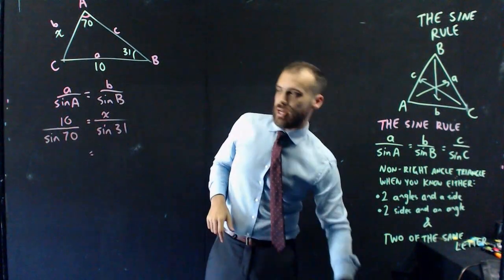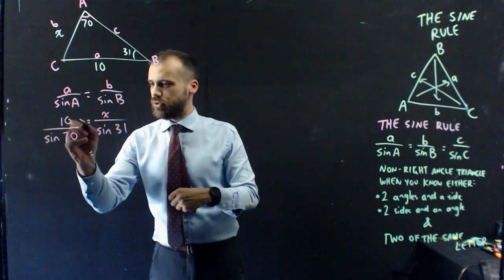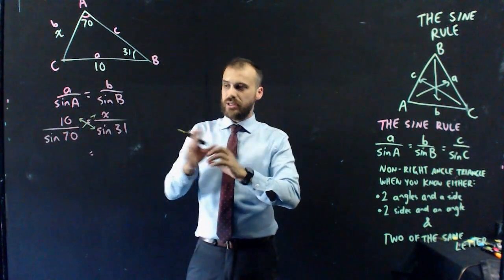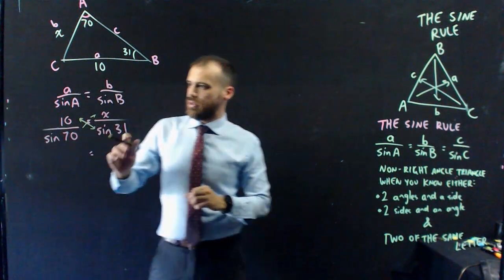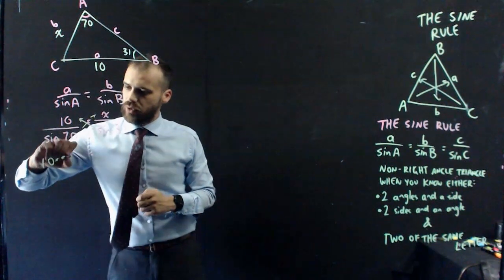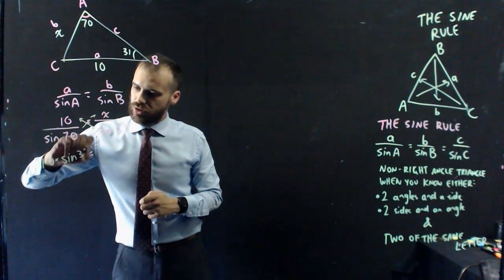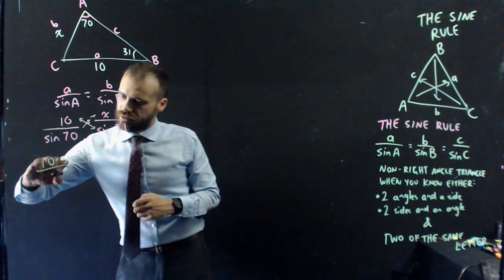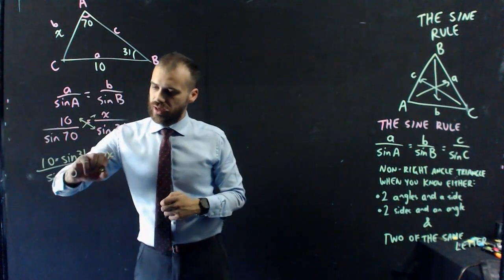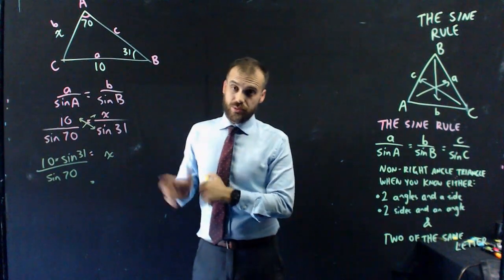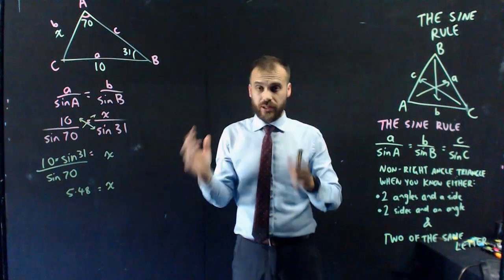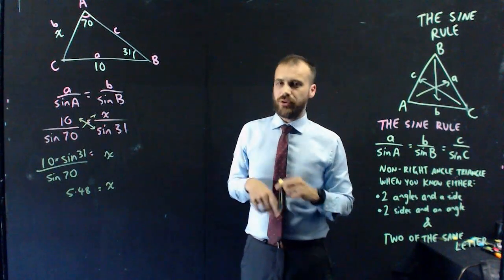And sine 31. Now, cross multiplication. I can move anything I want along these arrows, and the goal is to isolate X. So that's going to be 10 times sine 31, moving sine 31 up to the top, over sine 70 equals X. Now, I can literally just type that into my calculator, spit out an answer. X equals 5.48. I love the sine rule. I think it's even easier than that right angle stuff.